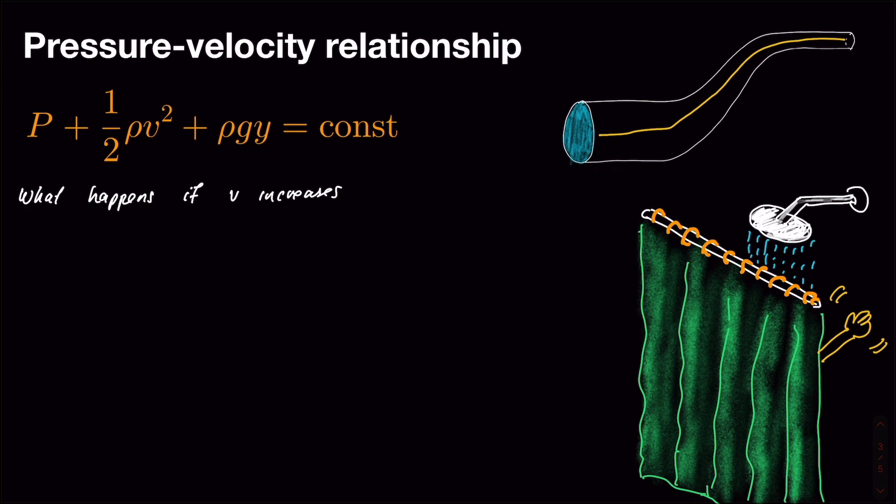But we'll imagine, just to slightly simplify even further, that actually what we're going to do is we're going to just have the pipe be horizontal. So it's kind of going like this. So we'll take away the elevation effect. So we know that the velocity will increase as we go from the left-hand end of the pipe to the far end of the pipe. And so the question is, what happens to our pressure as our velocity increases?